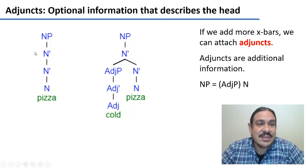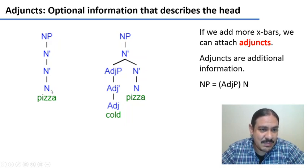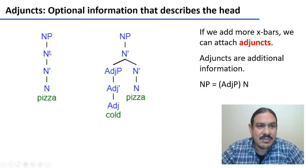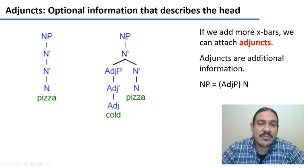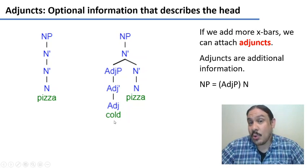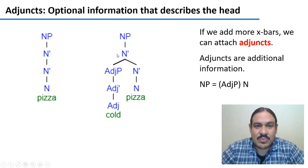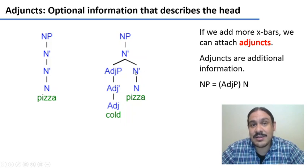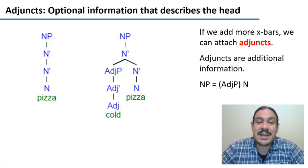We're going to attach adjuncts onto additional X-bar nodes. As you can see, we have the skeleton here with the noun phrase and the head 'pizza,' and we always reserve one node for a potential complement, but we add an additional one for optional information, like the one provided by adjuncts. So we have the noun phrase, and then on the first node — the one for adjuncts — we project an adjective phrase, which has a bar adjective and the head of an adjective, 'cold.' In the second node, we have an empty head in case we needed to add obligatory information for the complements, and then we have the head 'pizza.'